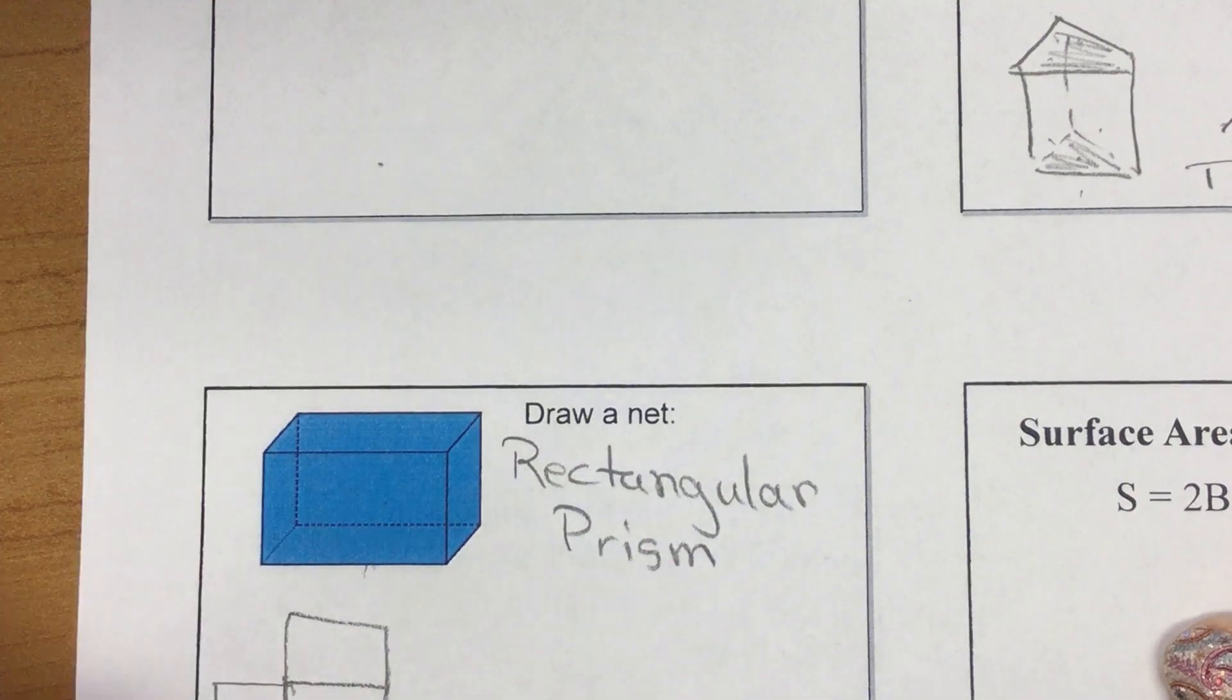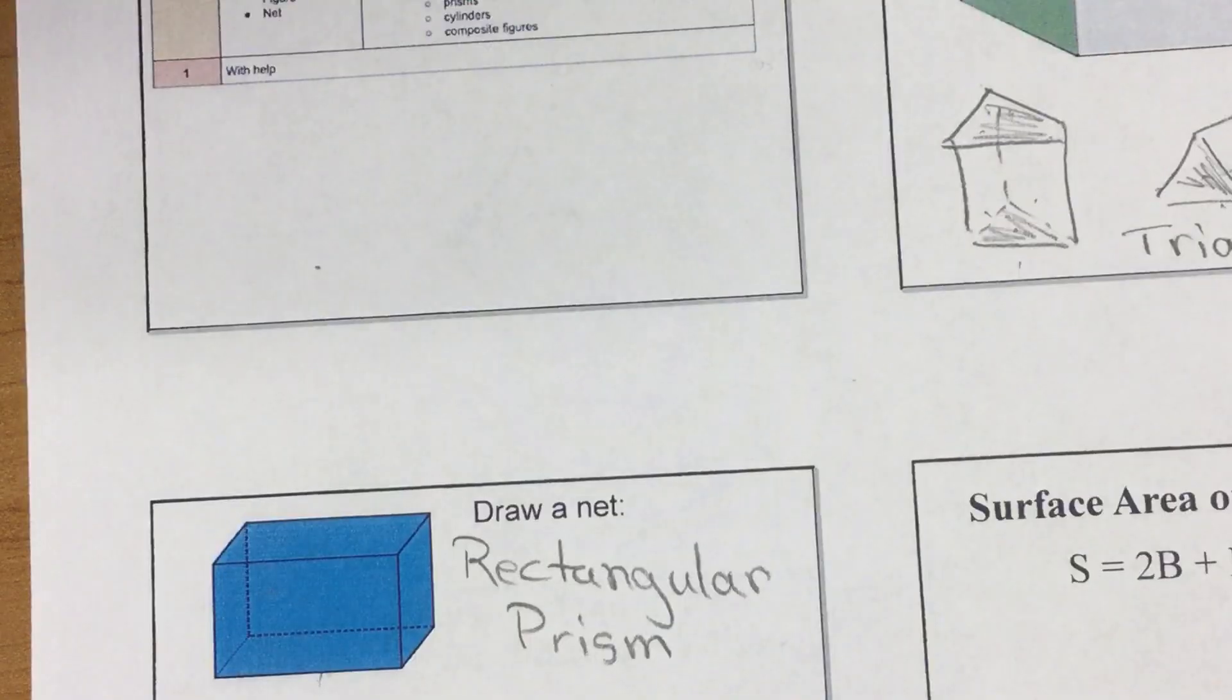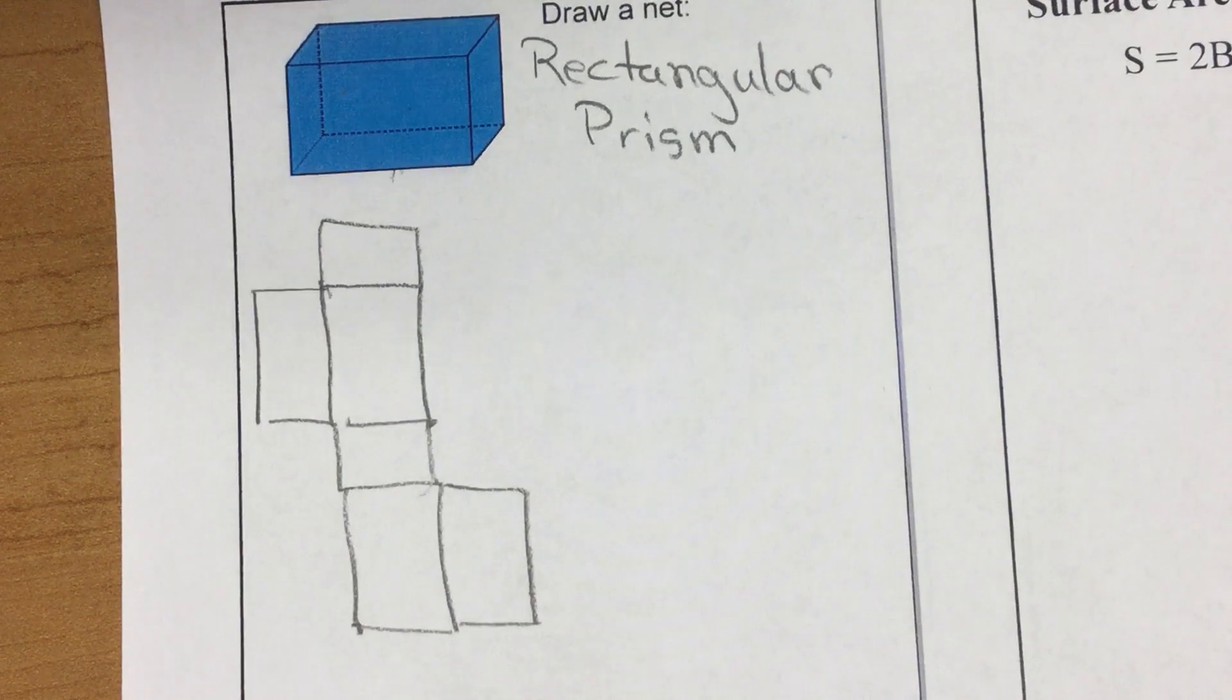If I rolled that up and taped it together, I would get that box back again. That would be what my net would look like.